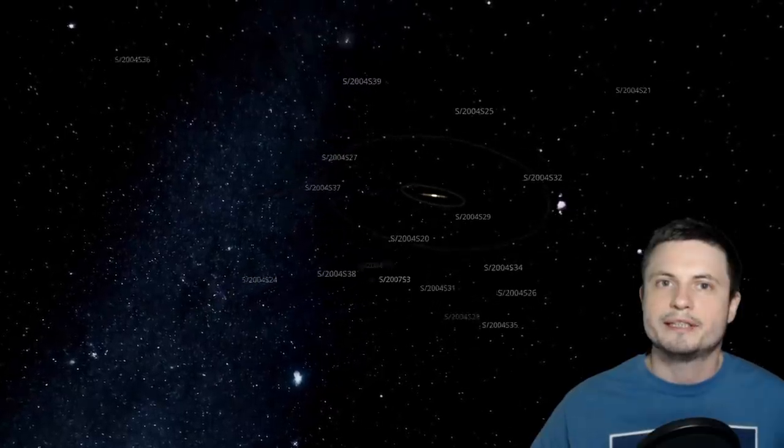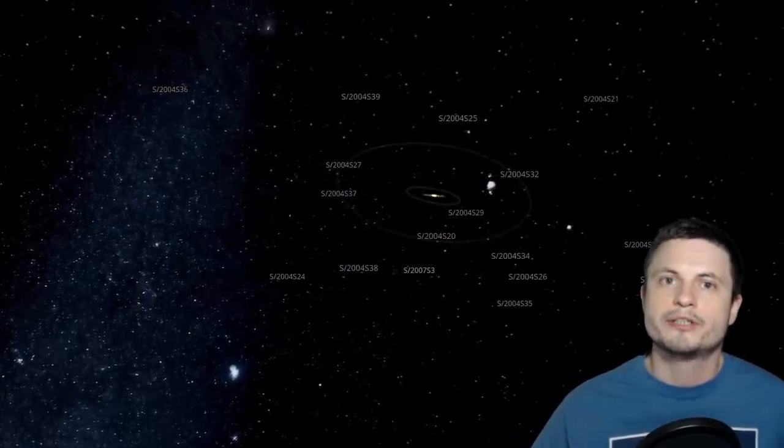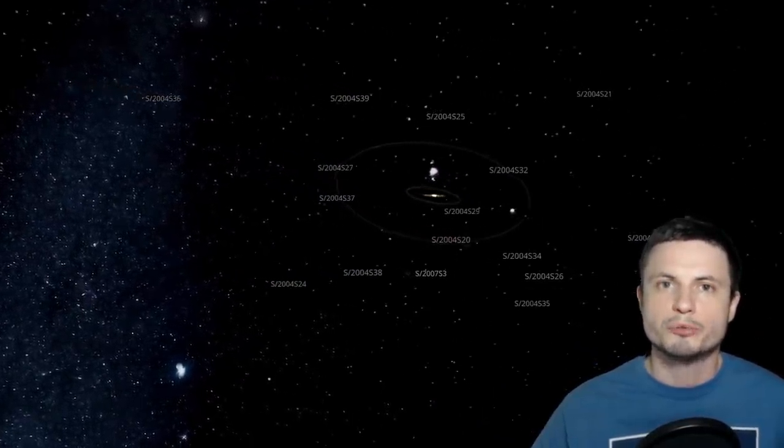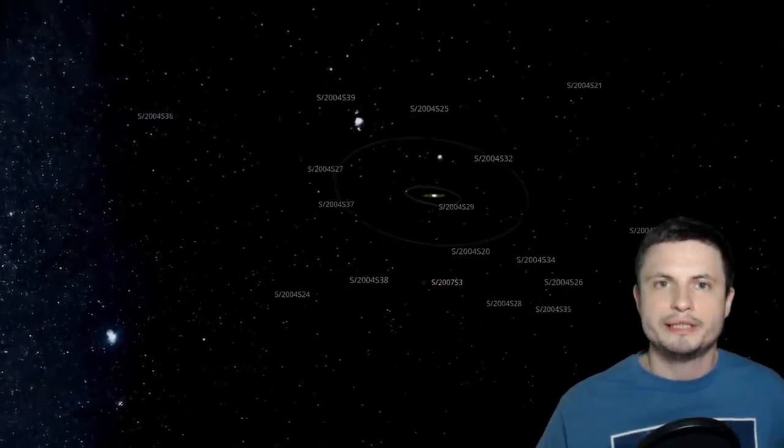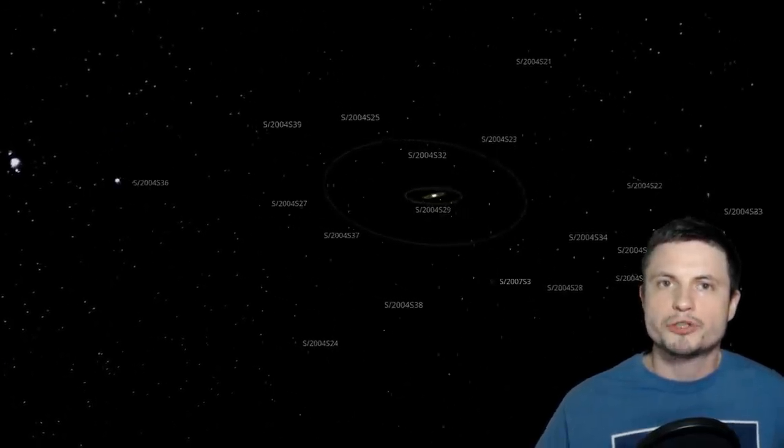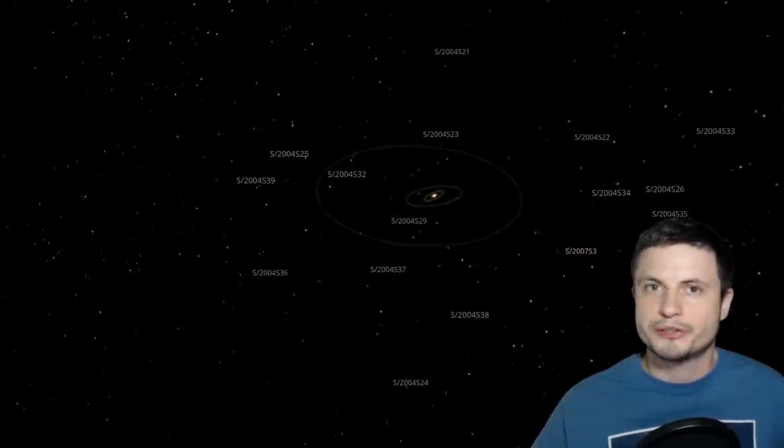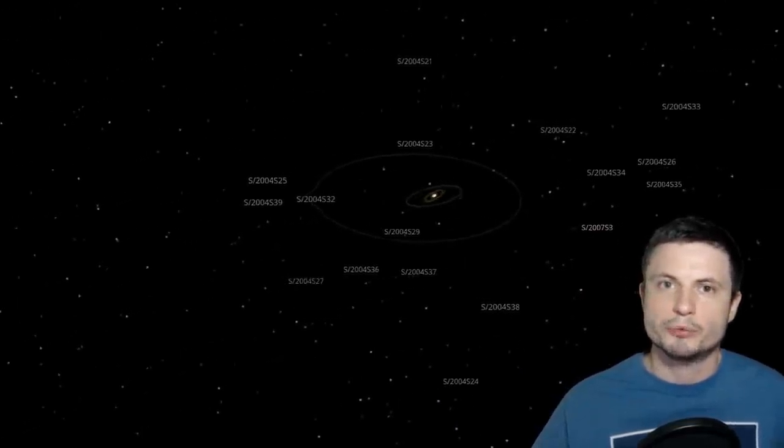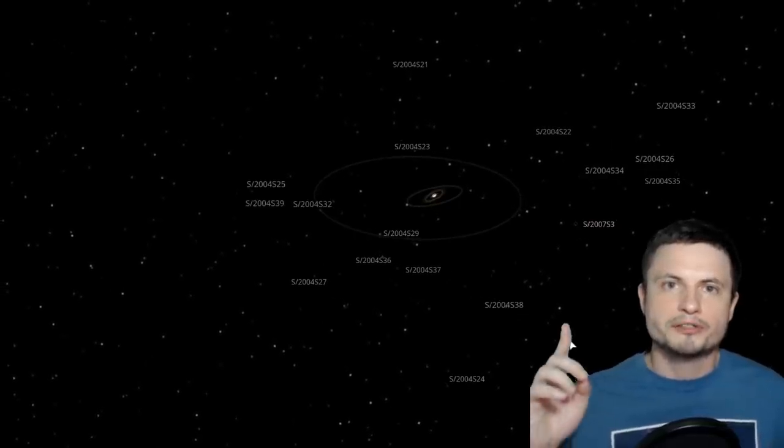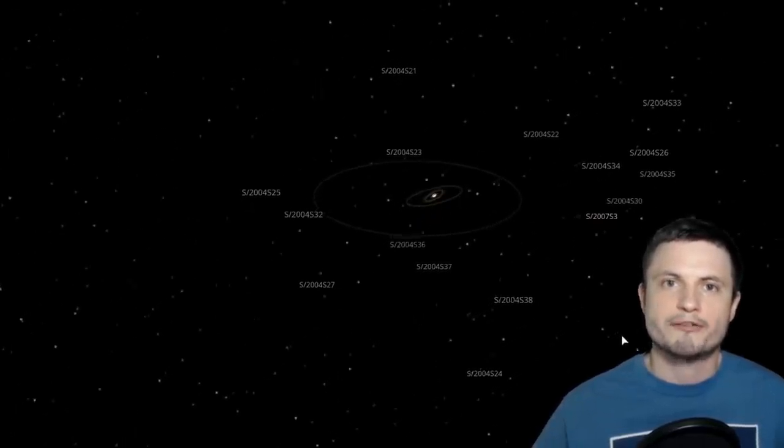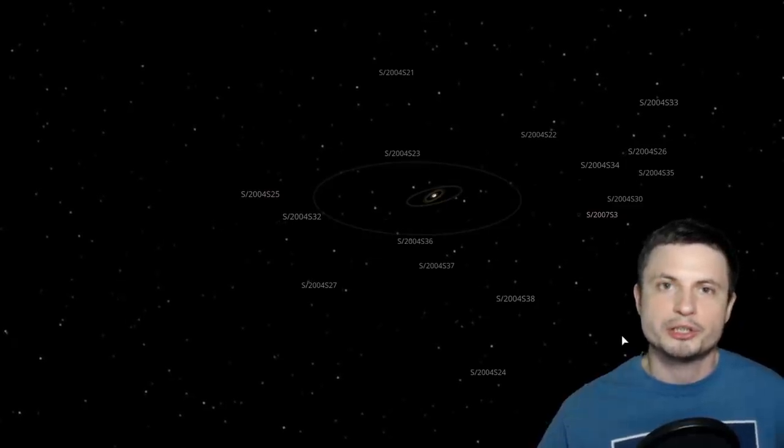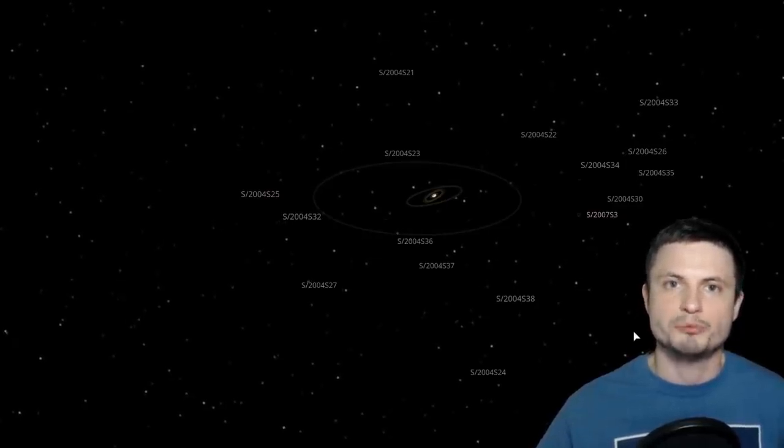And lastly, in 2019, this is when Scott Sheppard again discovered 20 more moons, irregular moons of Saturn, using the same Subaru telescope. But unfortunately, five of these moons are considered to be the so-called lost moons because their orbits are not precisely known. You may want to check out the video I made previously, where I do talk a little bit more about the discovery and also the competition that NASA is running to try to name these moons.